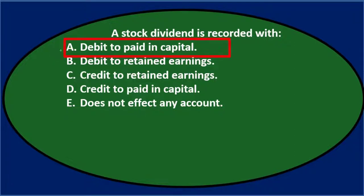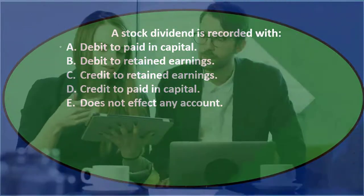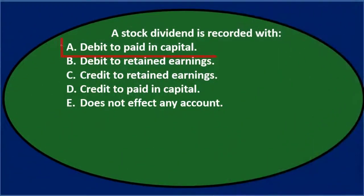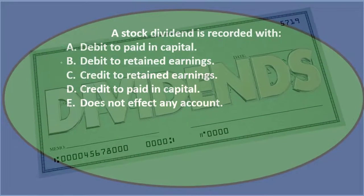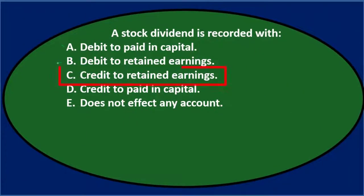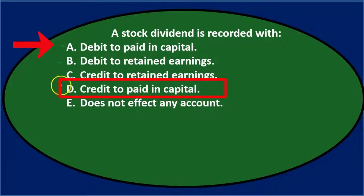A says debit to paid-in capital. A stock dividend might affect paid-in capital since it's in the equity section when we issue stock, so I'll keep that. B says debit to retained earnings — when we do a dividend, usually something happens to retained earnings, so I'll keep that. C says credit to retained earnings — B and C are the same except for debit versus credit, which suggests one of those two is correct. D says credit to paid-in capital — A and D are the same except for debit versus credit, so I'll keep that.